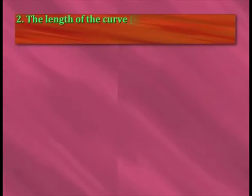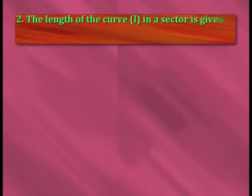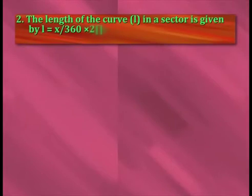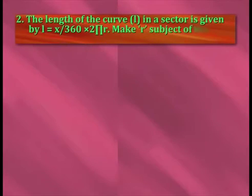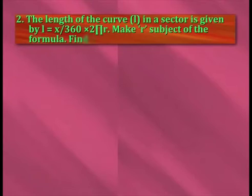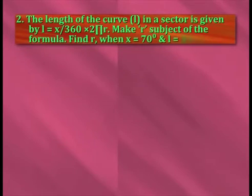The length of the curve l in a sector is given by l is equal to x by 360 into 2πr. Make r the subject of the formula and find r when x is equal to 70 degrees and l is equal to 33 centimeters. Solution: